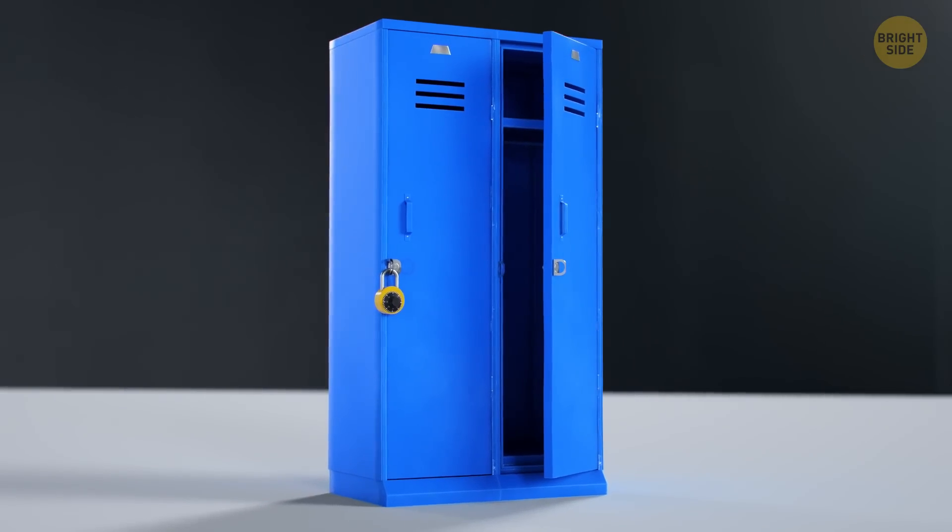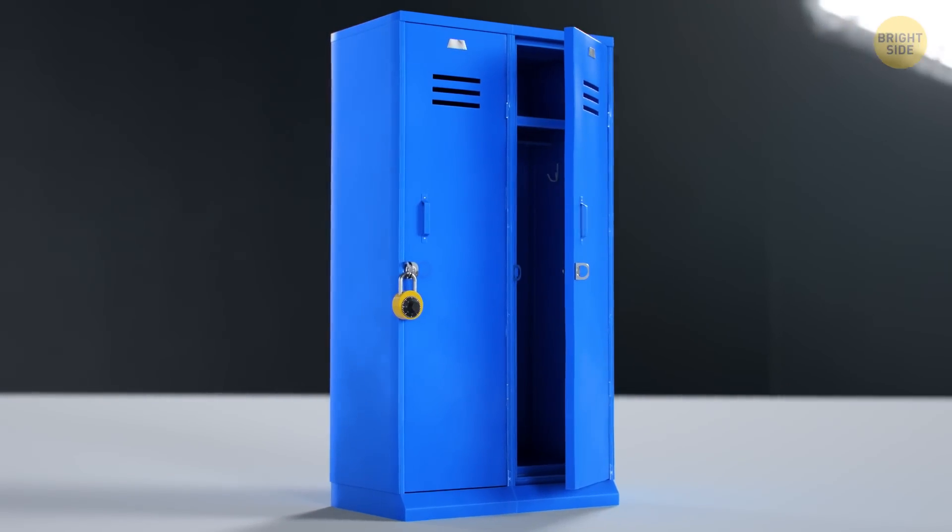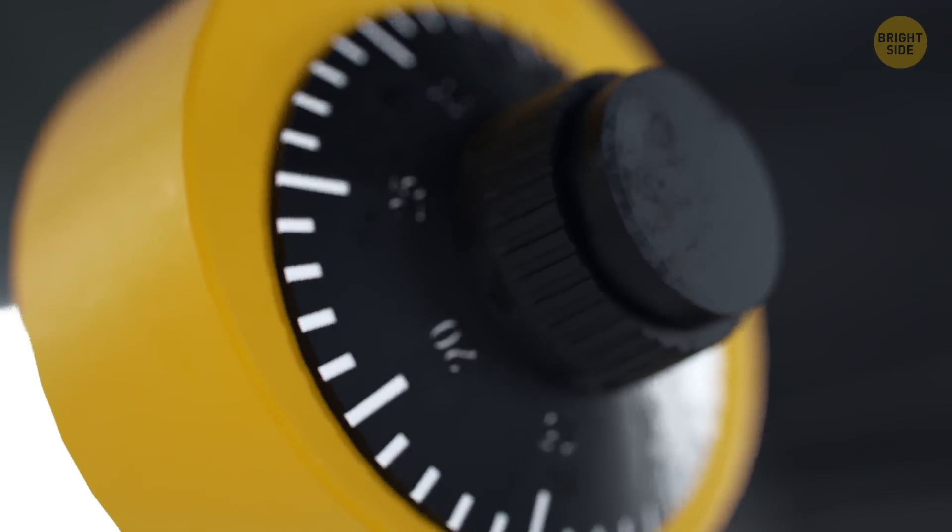So here's your school locker with a combination lock. Let's take it apart to see how it works. The whole mechanism is hidden in a metal case.